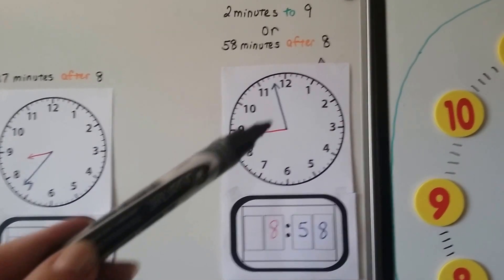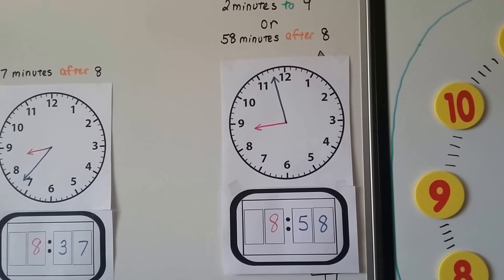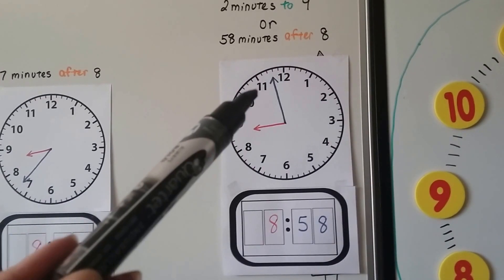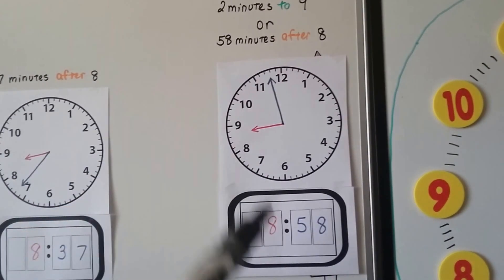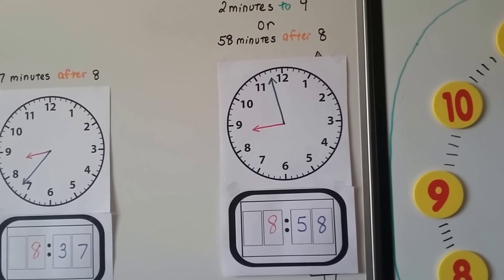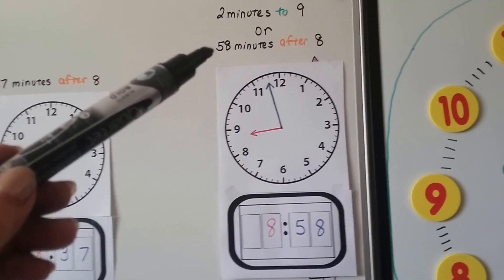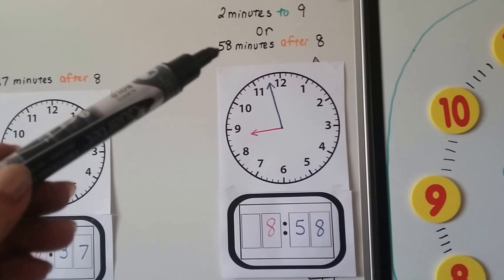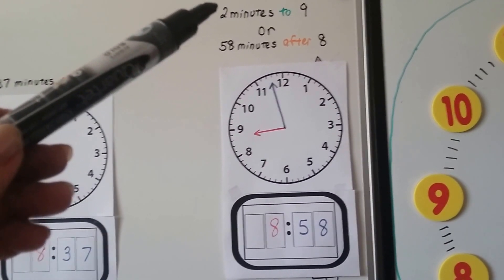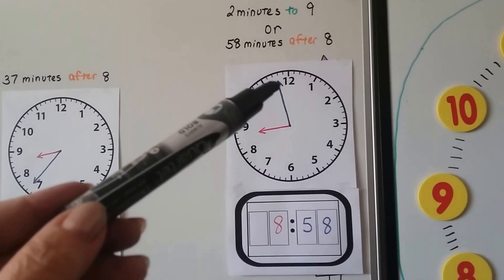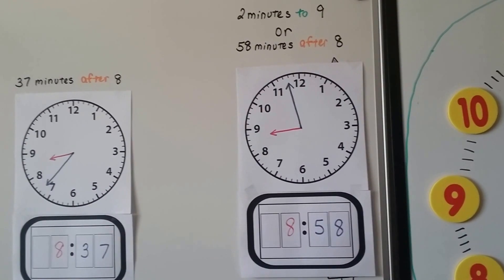It's not quite 9 o'clock — it almost is. The minute hand is about to be at the 12, but it's at the 11, which is 55, then 56, 57, 58. It's 8:58. You could say it's 58 minutes after 8, but people don't generally say that. They would say it's 2 minutes before 9, or 2 minutes to 9. In 2 more minutes it'll be 9 o'clock, so they just say it's 2 minutes to 9.